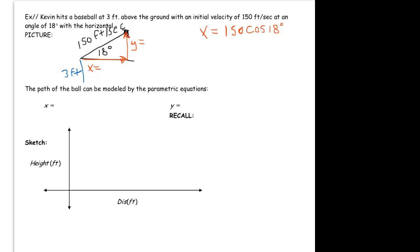That's because cosine of 18 is x over 150, so if you solve for x you get this, and when you put that in the calculator you get 142.658.